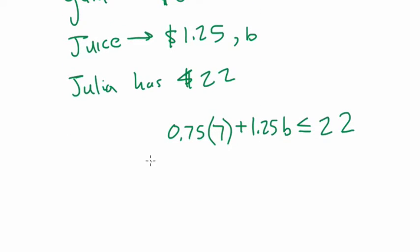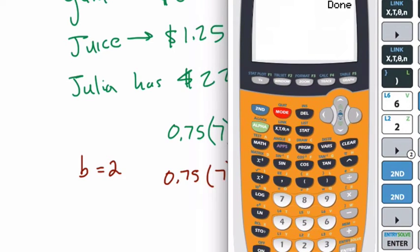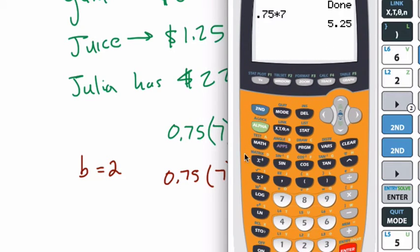Let's say she buys two bottles of juice. So B is two. Alright, can she buy two bottles of juice? Well, this inequality will help us. So we take 0.75 times 7. That's the cost of the packs of gum. So here I just enter in 0.75 times 7, which I guess I'm going to need a calculator for, but it's 5.25.